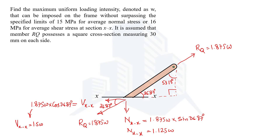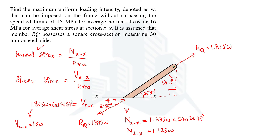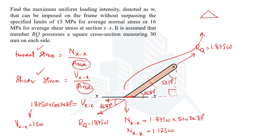We are doing this because we have been given normal and shear stress at this cross-section. Using the stress formula — stress equals force divided by area — we can calculate the loading intensity W. The formula for normal stress is NXX over area, and for shear stress it is VXX over area. We have the stresses but we need the area of section XX, which is not simply the given square cross-section since section XX is not perpendicular to the member axis.